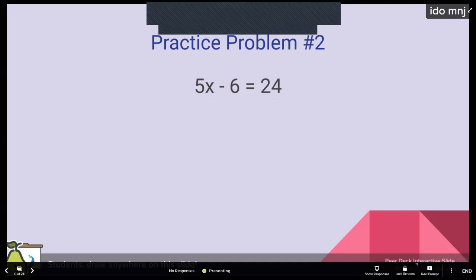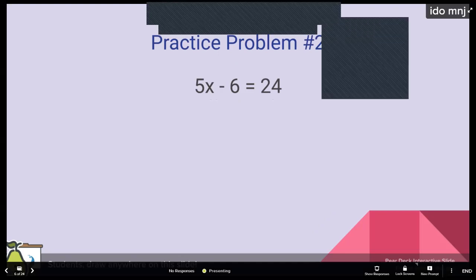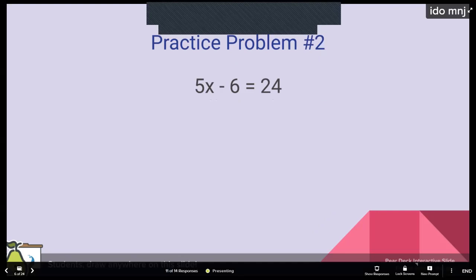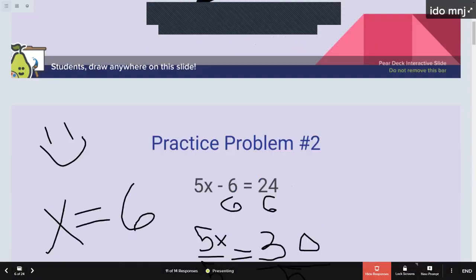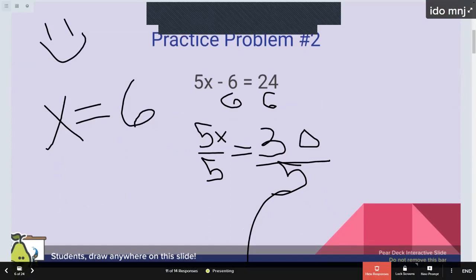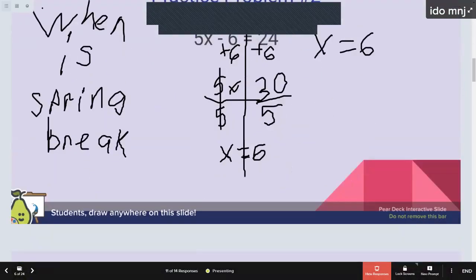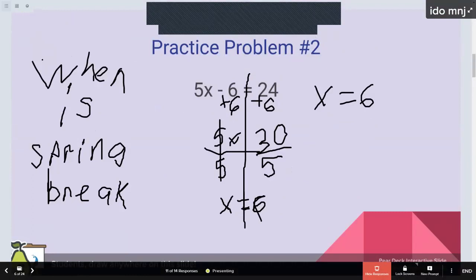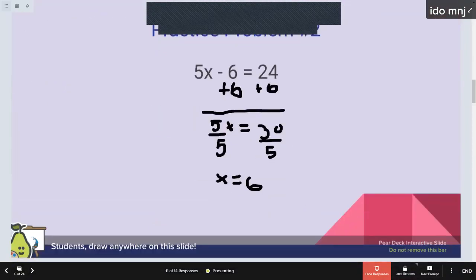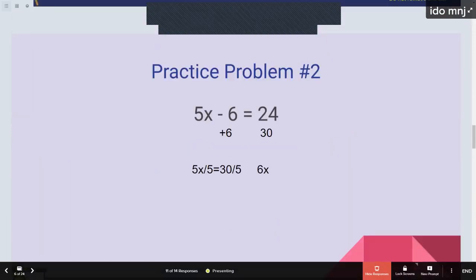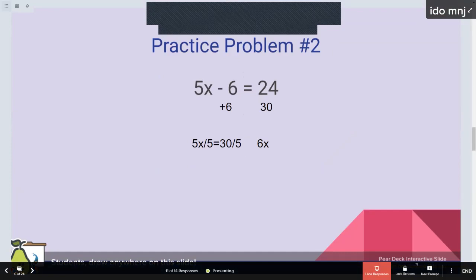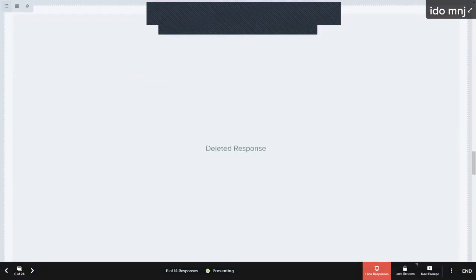All right, let's try another one. 5x minus 6 equals 24. Give you guys a couple minutes on this one. So you guys said, x equals 6. We show some good work here. It looks great. Nobody did what one of the students did last period, which was they subtracted 6 and got into a world of hurt trying to resolve that.